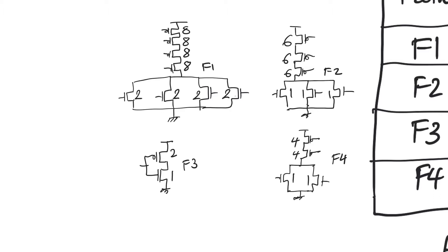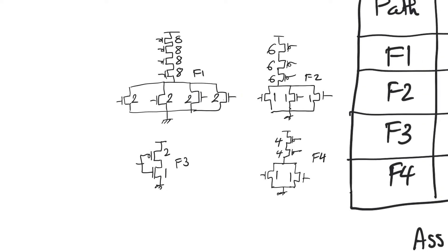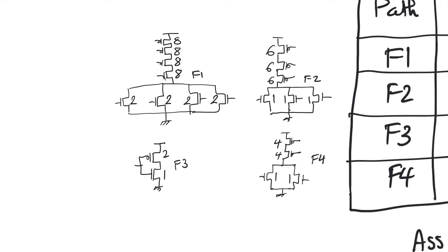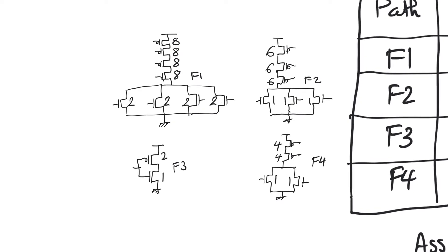Let's go and find the worst case high-to-low and worst case low-to-high delay, best case high-to-low and best case low-to-high delay. The reason we are finding worst case as well as best case is that we want to check if there are setup time violations, for which we need to look at the worst case delays.